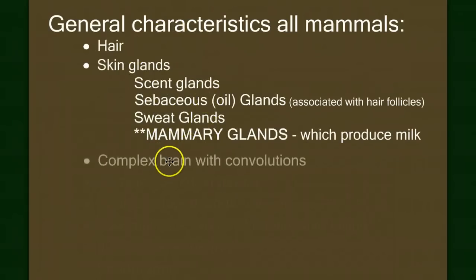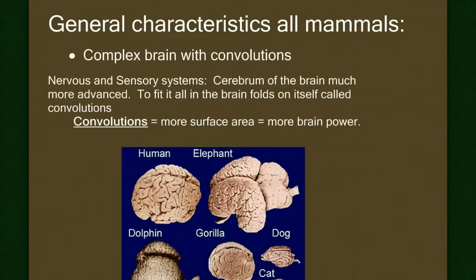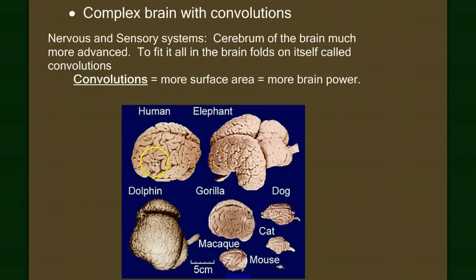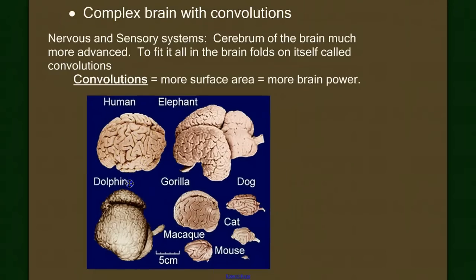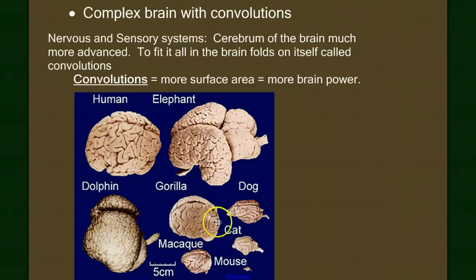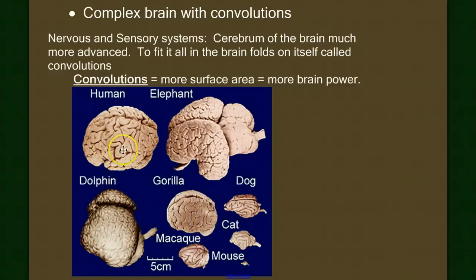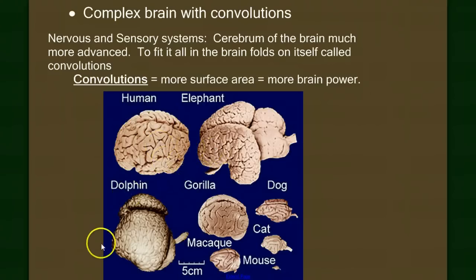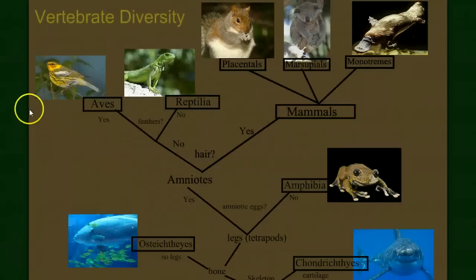The next characteristic seen in all mammals is a complex brain with convolutions. When we look at the mammal brain, it's pretty unique. Convolutions are folds — you see all these folds that kind of look like spaghetti. When you look at the brain of a fish, reptile, amphibian, or even a bird, the cerebrum is actually smooth. In the evolution of mammals, the cerebrum was growing but the brain case didn't grow as fast, so the brain had to fold in on itself. Overall, it's the mammals that have the larger brains and better sensory and nervous systems.